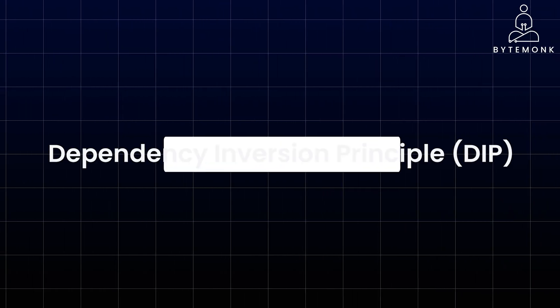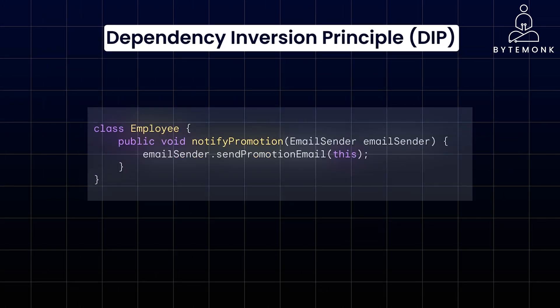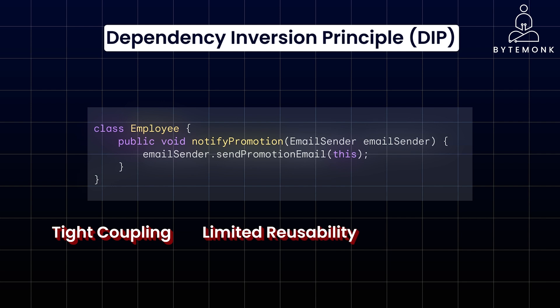Finally, the Dependency Inversion Principle, or DIP. The idea is that high-level modules should not depend on low-level modules — both should depend on abstractions or interfaces. In this example, the Employee class directly depends on the specific EmailSender class. This creates problems: the Employee class is tightly coupled to EmailSender, so if you want to change the notification mechanism to SMS instead of email, you would need to modify the Employee class itself, making the code less flexible. Additionally, testing becomes more difficult because of the tight coupling to an external dependency.